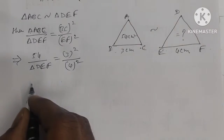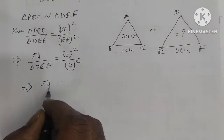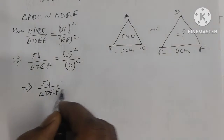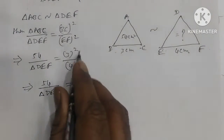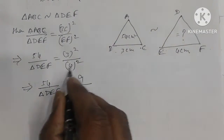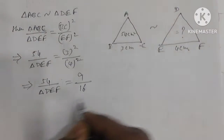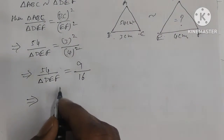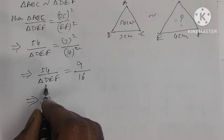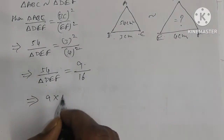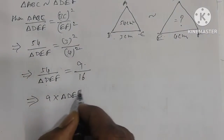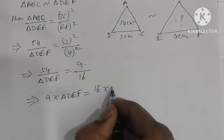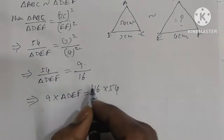Simplifying: 54 divided by area of triangle DEF equals 3² by 4², which is 9 by 16. By cross multiplication, 9 × area of triangle DEF = 16 × 54.